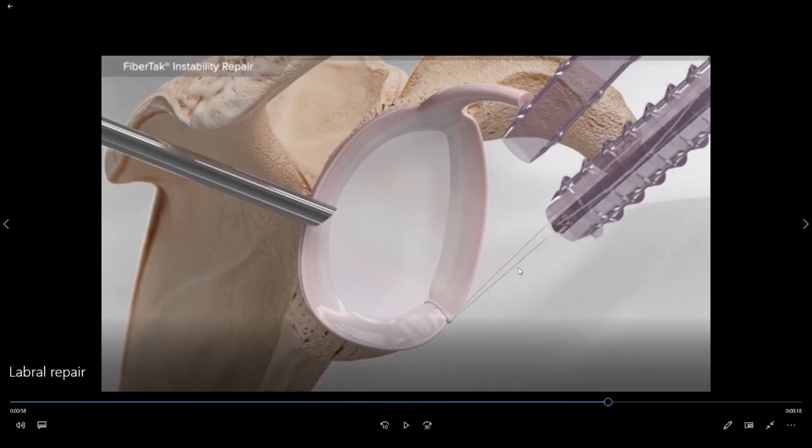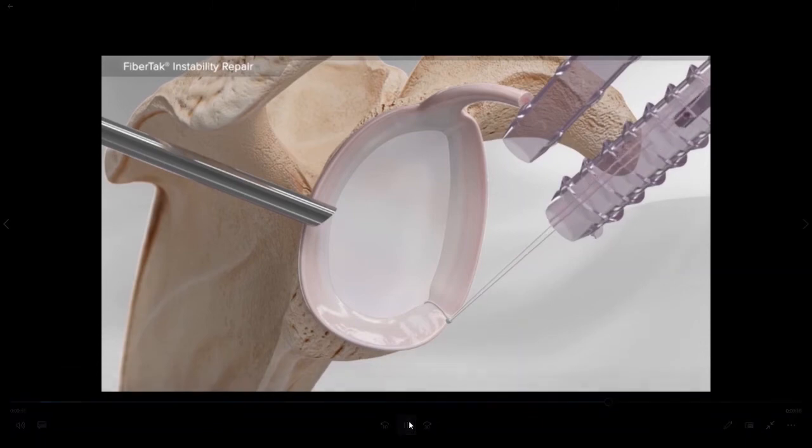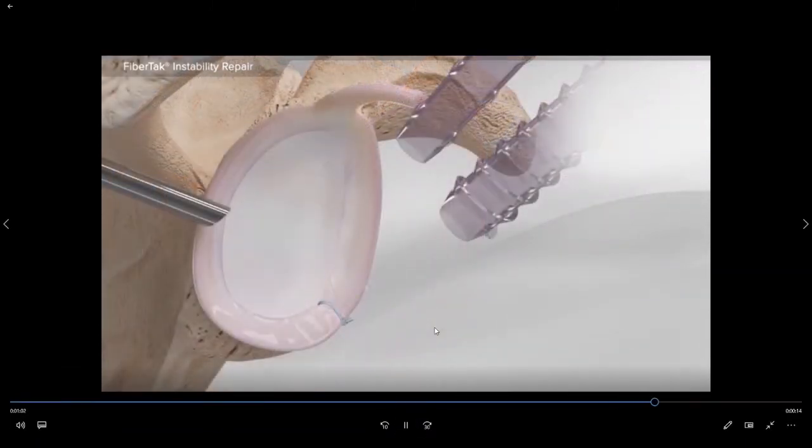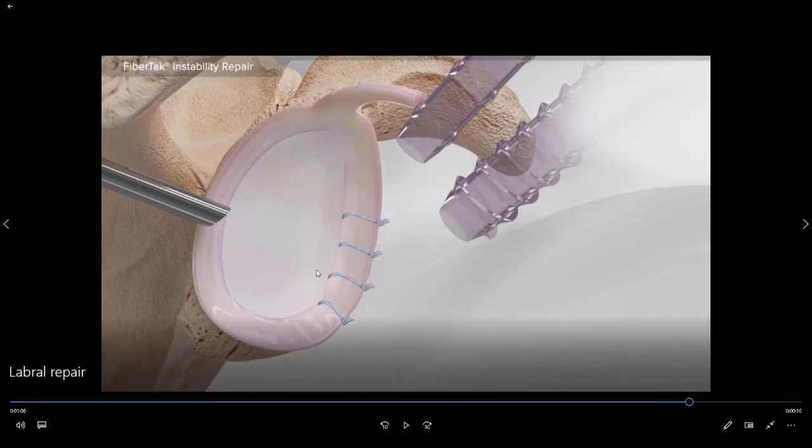As you can see as we tie a knot it compresses the tissue against the bone and it's that compression that we are gaining with the repair that's going to help to stimulate the healing. The excess suture is then cut and removed. We can then move up the front of the labrum if there are additional areas of tearing until all areas of the tear are completely affixed back to the bone.